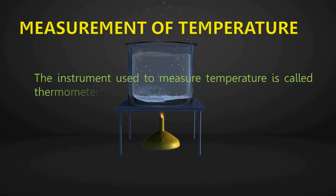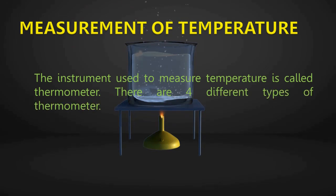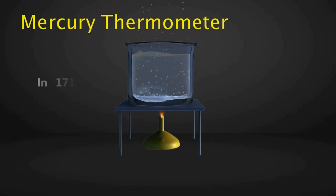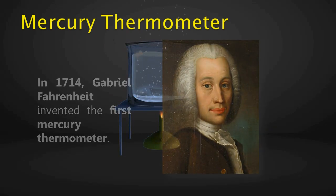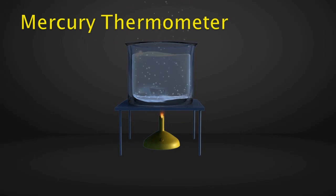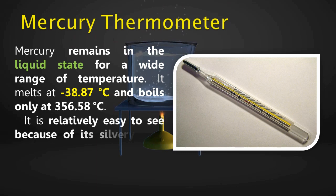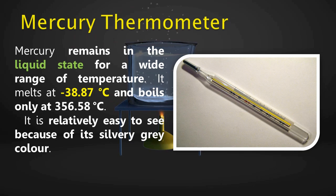Measurement of temperature: the instrument used to measure temperature is called a thermometer, and there are four different types. Mercury thermometer: in 1714, Gabriel Fahrenheit invented the first mercury thermometer. Mercury is used because it remains liquid for a wide range of temperatures — it melts at −38.87 degrees Celsius and boils at 356.58 degrees Celsius. It is easy to see due to its silvery-grey color, does not stick to glass, and has a fairly uniform rate of expansion across a wide range of temperatures.